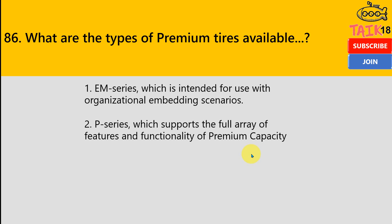So the next question is: what are the types of premium tiers available in Power BI? We all know about the premium capacity and premium per user. So these are actually talking about the tiers. It means we have two types: one is EM series and another is P series. EM series is intended to use with organizational embedding scenarios, and P series supports the full array of features and functionality of premium capacity.